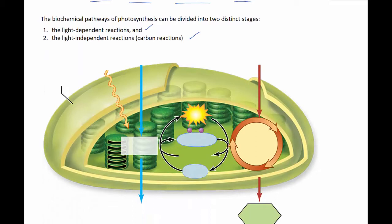The light reactions convert solar energy to chemical energy. The light-dependent reactions are actually the photo part of photosynthesis, because this is where light energy is actually captured through these reactions. Here's our chloroplast, and here is the sunlight energy, which is captured by pigments in our thylakoid membrane.